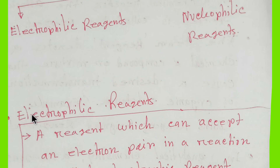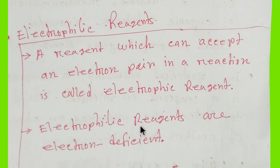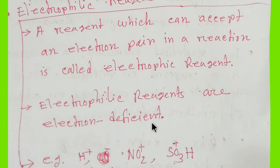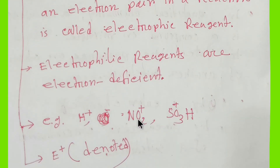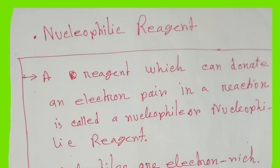A reagent which can accept an electron pair in a reaction is called an electrophilic reagent. Electrophilic reagents accept electrons from others — they are electron deficient. Examples include proton, nitrate ion, and sulfonic acid. Electrophilic reagent is represented or denoted by E+.